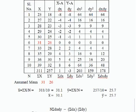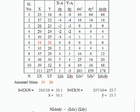Next, compute the dx² column by squaring all dx values: (−8)²=64, (−4)²=16, (−3)²=9, (−2)²=4, (−1)²=1, 0²=0, 0²=0, 2²=4, 4²=16, 5²=25, and 8²=64. Adding all dx² values gives sigma dx² = 203.